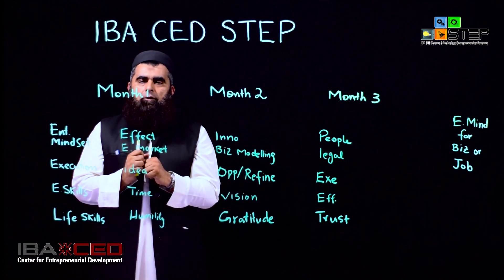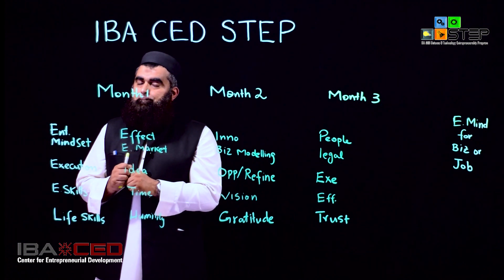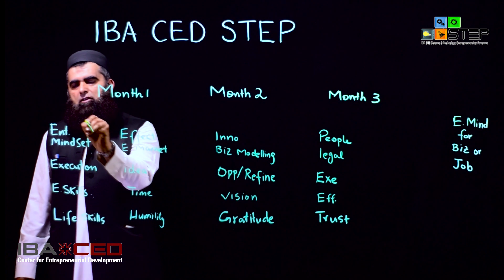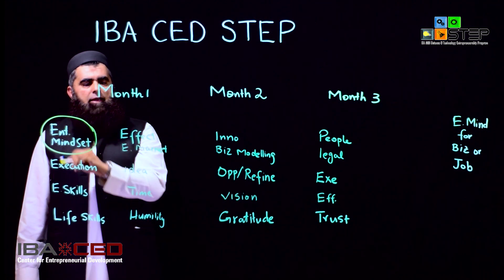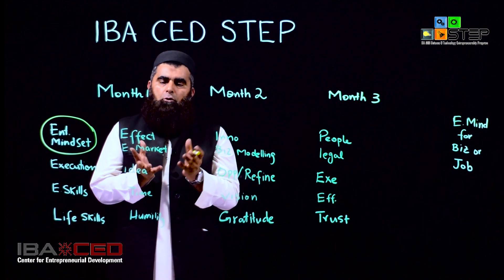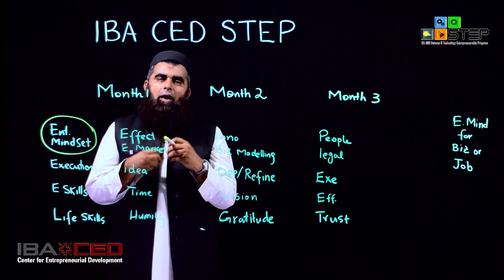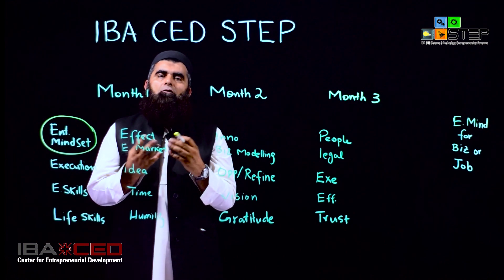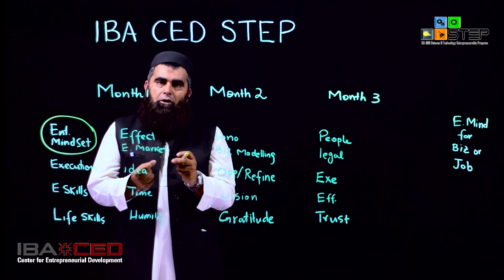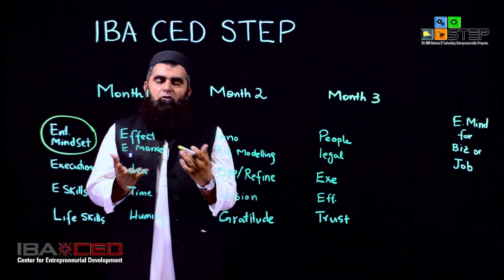We have three months and four modules. In the first month, we focus on the Entrepreneurial Mindset. We talk about the effectuation theory of entrepreneurship — how to proceed with things, how to create an effect with whatever you have, how to identify your entrepreneurial potential, and how to identify and leverage the resources which are within you.